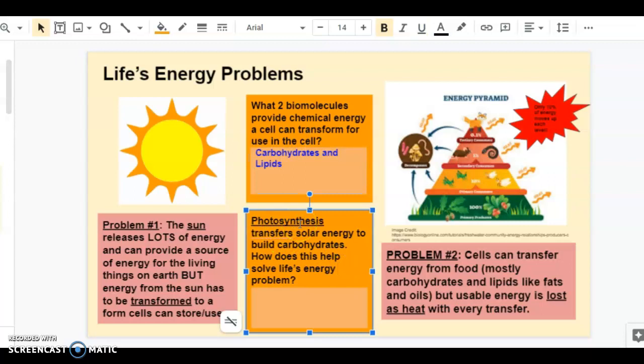Next question. Photosynthesis is a process that transfers solar energy and builds carbohydrates, which are one of our energy macromolecules. How does this help solve life's energy problems? Well, it helps us to take energy from the sun, which cells can't use directly, and give cells something that they can, which is the carbohydrate. So it transforms energy from the sun to a form of energy cells can use, carbs.